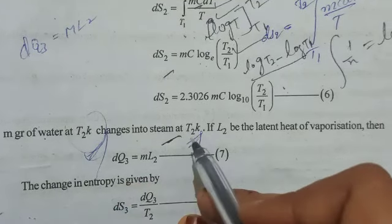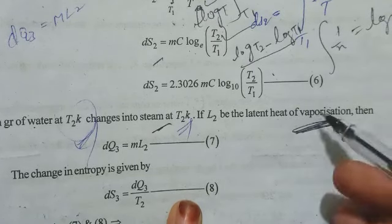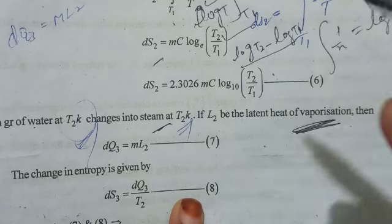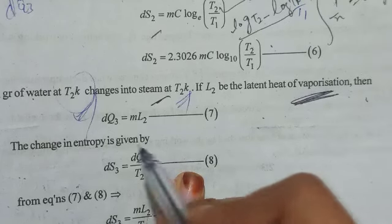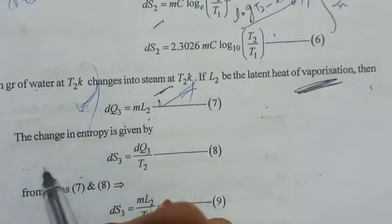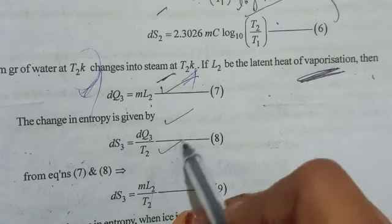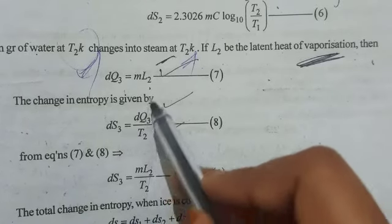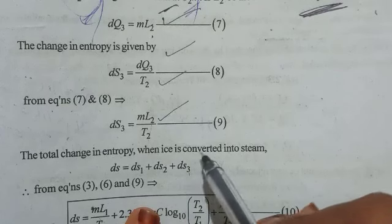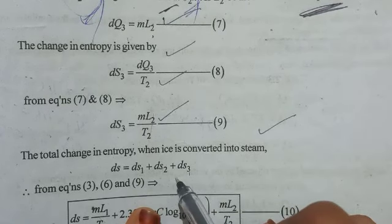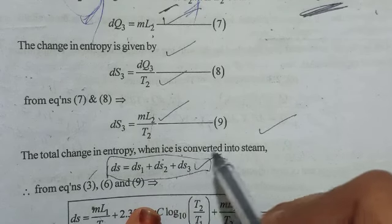Last, we convert water to steam. m grams of water at T2 Kelvin changes into steam at T2 Kelvin. If L2 is the latent heat of vaporization, then dQ3 equals mL2. The change in entropy is dS3 equals dQ3 by T2, which equals mL2 by T2. Therefore, the total change in entropy when ice is converted to steam is dS1 plus dS2 plus dS3.